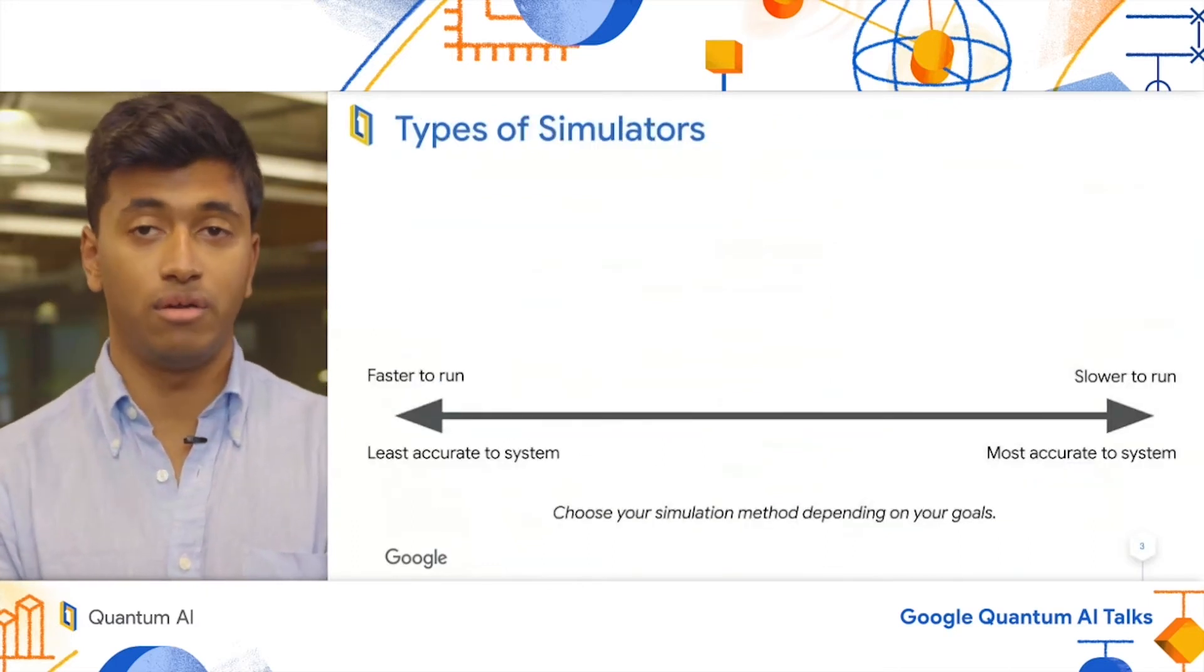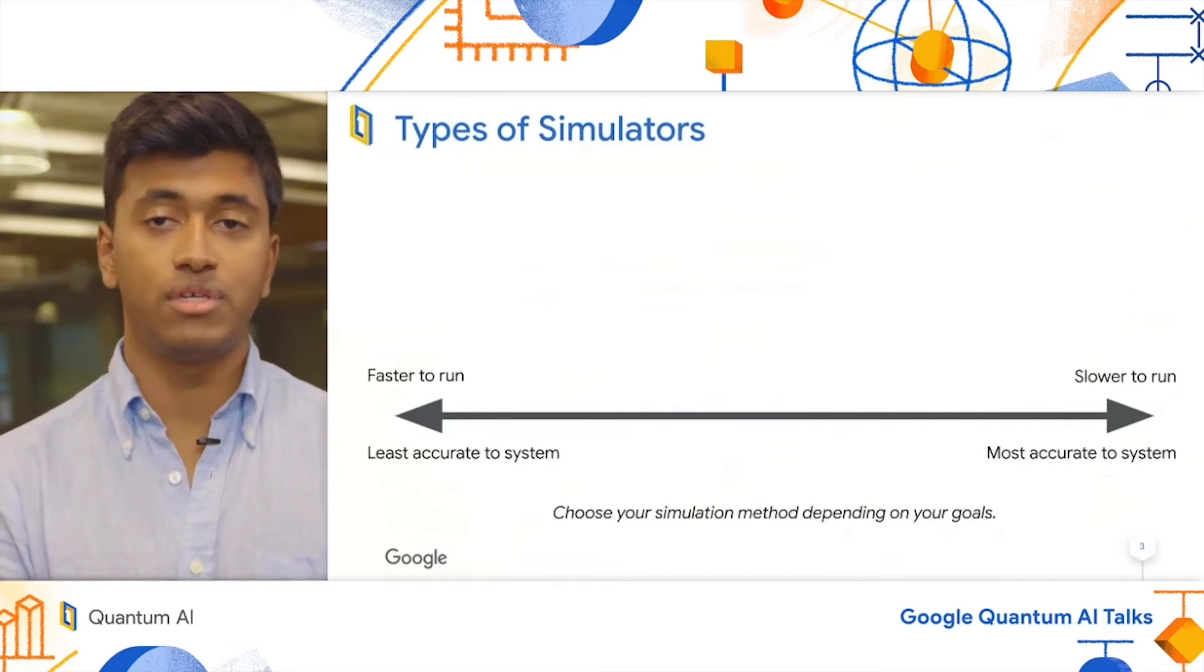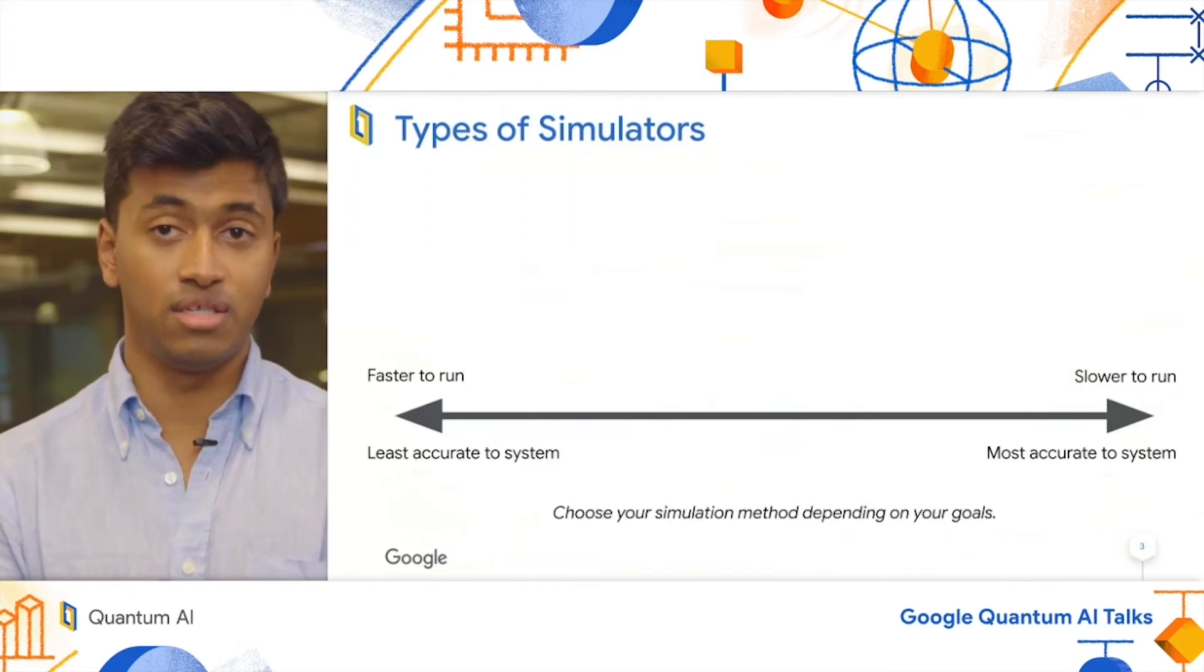In order to use our models, we have to have different simulations, so I'm going to run through them quickly here. On the left, I will have simulations that are fast to run, however, do not closely match the system dynamics.